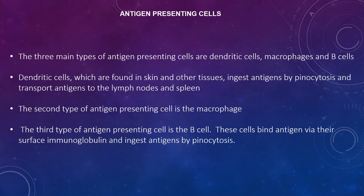Three main types of antigen-presenting cells include dendritic cells, macrophages, and B cells, although other cells that express class 2 MHC molecules, such as thymic epithelial cells, can act as antigen-presenting cells in some cases. Dendritic cells are found in the skin and other tissues, ingest antigens by pinocytosis, and transport antigens to the lymph nodes and spleen, where they are found predominantly in T cell areas. Dendritic cells are the most effective antigen-presenting cells and present antigens to naive T cells.